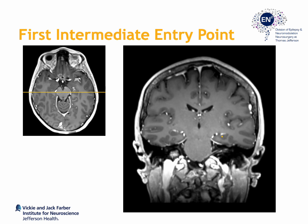Next, I move back to the level of the hippocampal body where the hippocampus is most concave relative to the brainstem and ambient cistern. I define an intermediate entry point located within the hippocampal body itself, positioned relatively medial within the hippocampus in order to ensure that the most medial portions will be covered within the ablation. This point is typically one quarter or one third of the way from the medial border of the hippocampus.